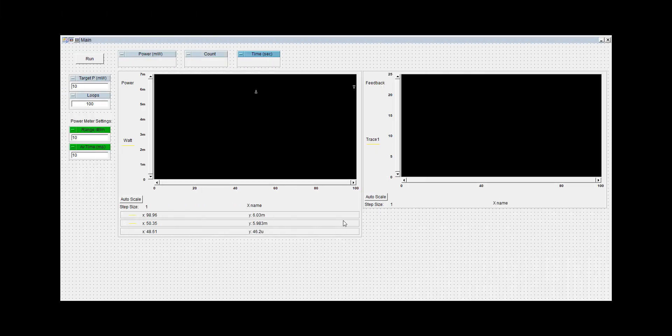The example program will graph the power measured through the polarizer on the optical power meter on the left, as well as the feedback value being sent to the N7785C over on the right.